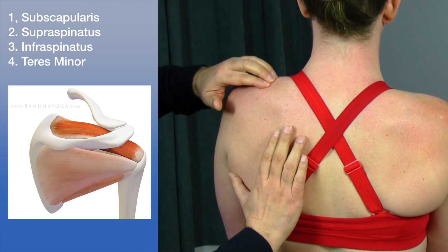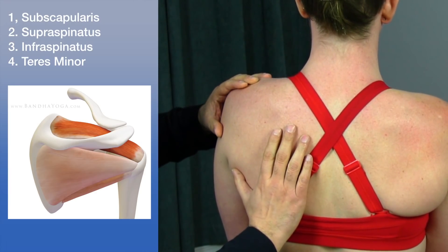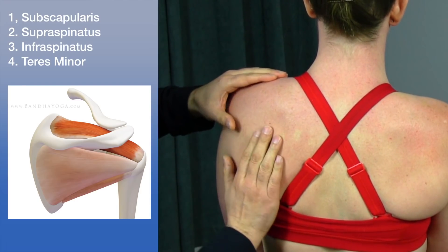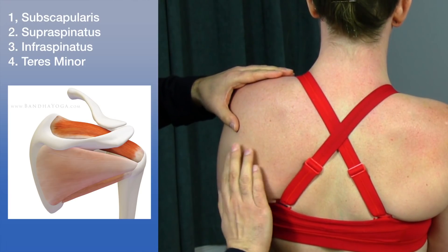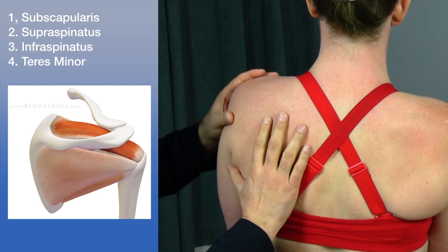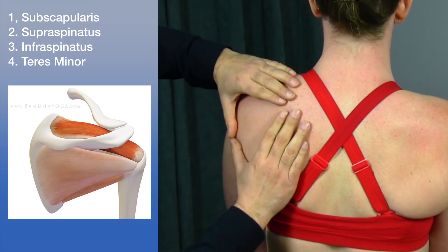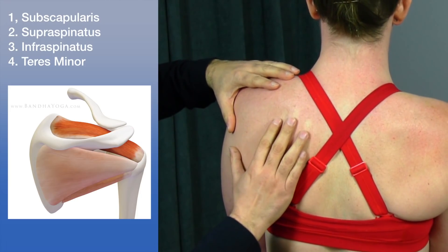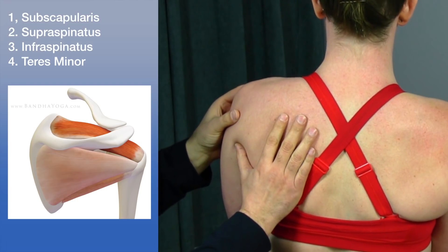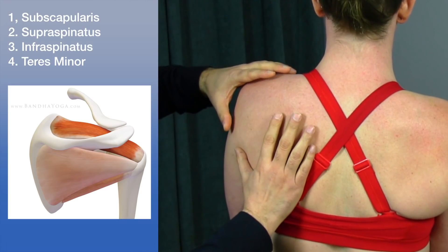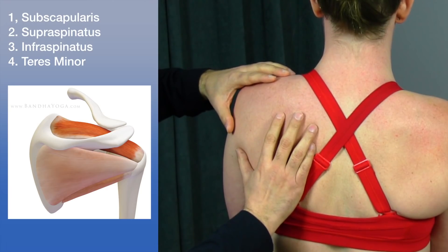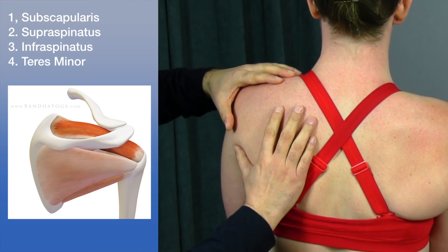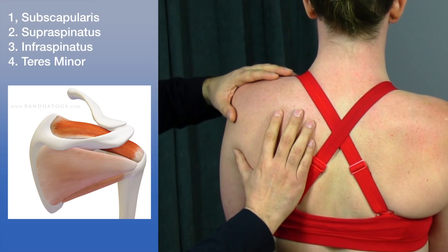The supraspinatus helps prevent the humerus from being dislocated upward. The infraspinatus and teres minor help prevent the humerus from being dislocated forward. The subscapularis, on the anterior aspect of the scapular triangle, helps prevent the head of the humerus from gliding backward. This shows that the shoulder's bony structure and passive attachments are slightly weak stabilizers — the main stabilizing force comes from these periarticular muscles.